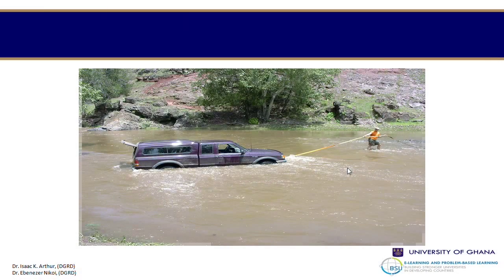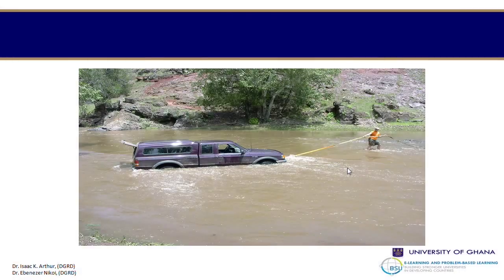Much as we talk about the influence of man on the physical environment, we see examples where the environment shows us where the power actually lies. In a number of cases, people with big machines think they can overcome the environment. For instance, during floods, people want to drive their cars through because they think they have acquired the ultimate capacity to overcome such situations — and this is where it sometimes ends badly.